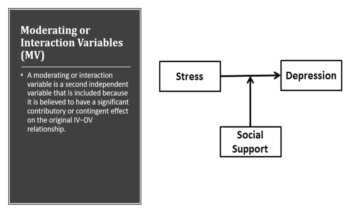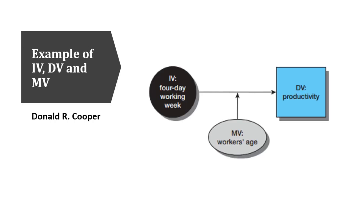The next type of variable is moderating or interaction variables. The moderating variable is a second independent variable included because it is believed to have a significant contributory or contingent effect on the original independent and dependent variable relationship. For example, stress leads to depression — depression is the dependent variable, stress is the independent variable, but social support is a moderating variable. Donald R. Cooper provided a model: independent variable is a 4-day working week, dependent variable is productivity of the firm, and the age of the worker is the moderating variable.